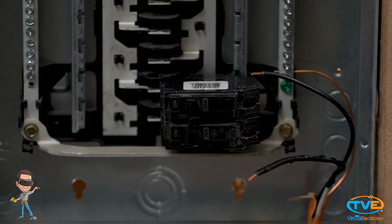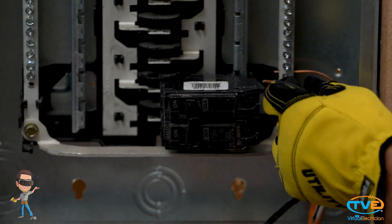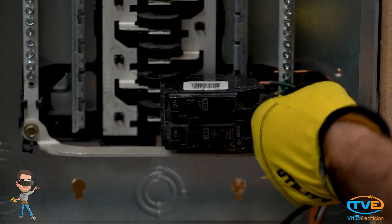Now install each circuit. Land the grounds on the ground bar, the neutrals on the neutral bar, and the hot wires on the breaker. Snap the breakers into place. Make sure the green bonding screw in the panel is tightened down.